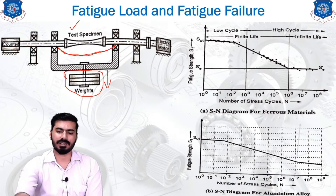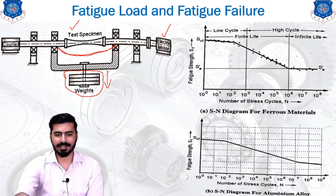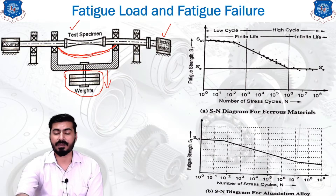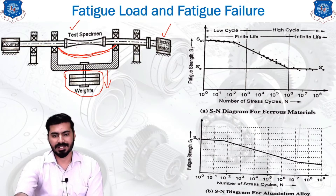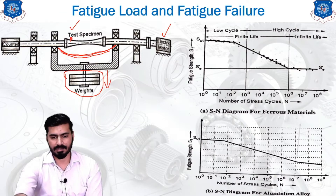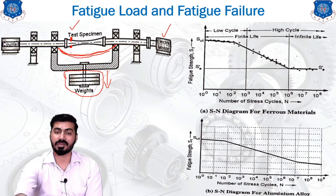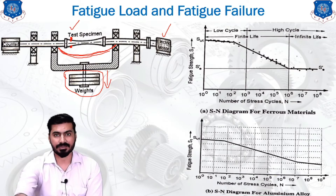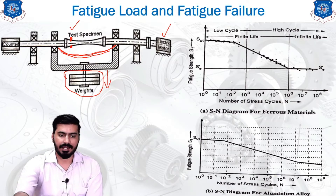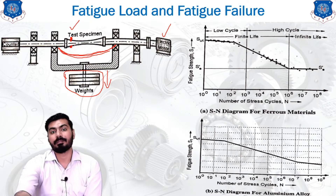There is one electric motor connected to the setup. Due to the bending, the lower fibre of the specimen is under tension and the upper fibre is under compression. If we consider one point at the bottom and one point at the top, the bottom point is subjected to tensile bending stress and the top point is subjected to compressive bending stress.